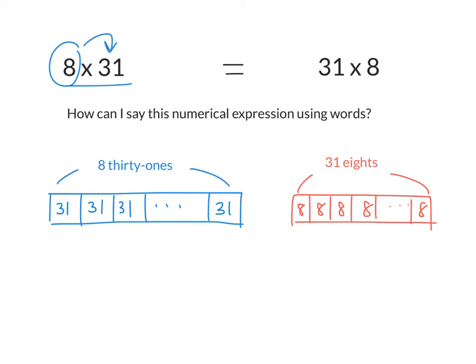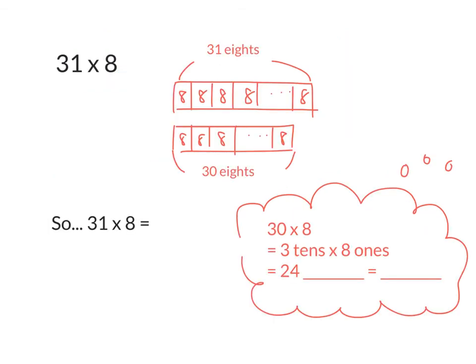Now, if I use the commutative property to think of it as 31 times 8 instead, this time, what's my unit? 8s, right? And how many 8s do I have? 31 eights. So, again, I can draw using a tape diagram. This time I have 8s are my unit. Do you see how inside each box I have an 8? But then how many of them do I have? How many of them do I have, everyone? 31. So, if we think of it as 31 eights, here's 31 eights.